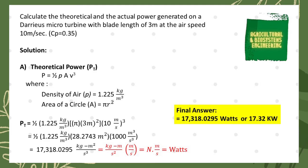We can simplify the units further. Extracting meters per second gives us kg·m/s² times m/s, and we know that kg·m/s² equals Newtons. Therefore, Newtons times meters per second equals watts. So our final answer for the theoretical power is 17,318.0295 watts, or 17.32 kilowatts when divided by 1,000. Note that we did not use the power coefficient here because, for theoretical power, we always assume the power coefficient is 100%, or equal to 1.